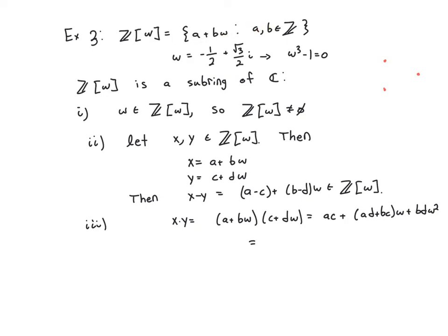And so you're taking integer multiple combinations of these three points in the complex plane. And the claim is that this is, in fact, a subring of C. Well, certainly it's not empty, because it contains at least these three points. At least it contains this point.